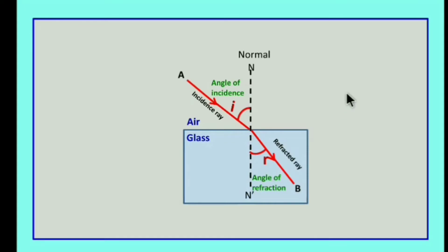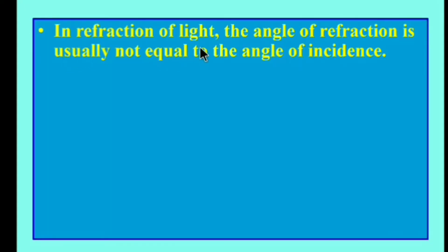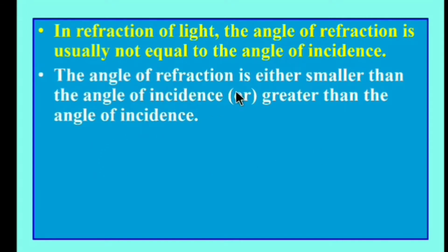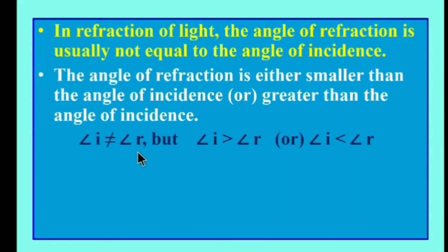In refraction, the angle of refraction is usually not equal to the angle of incidence — unlike reflection, where angle of incidence equals angle of reflection. In refraction, the angle of refraction is either smaller than or greater than the angle of incidence; that is, angle of incidence is not equal to angle of refraction.